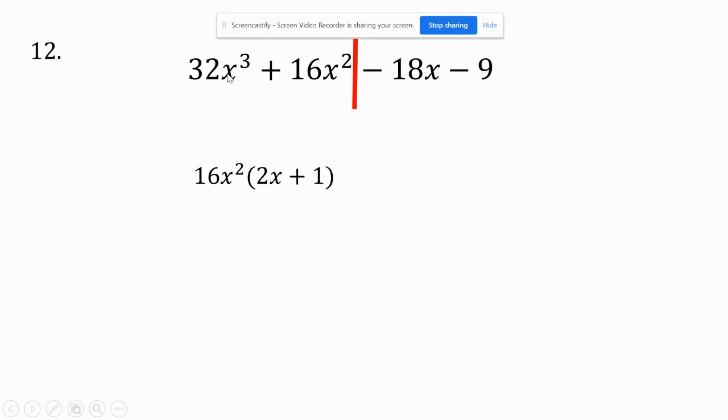Because I have 2x plus 1 here, I got to have 2x plus 1 here. Well, what I multiply by 2x to get a negative 18x would be negative 9. And notice negative 9 times 2x and negative 9 times 1 makes that up there.